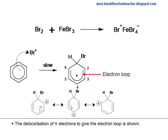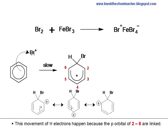The delocalization of pi electrons to give the electron loop is shown too. This movement of pi electrons happens because the p orbital of 2 to 6 are linked.